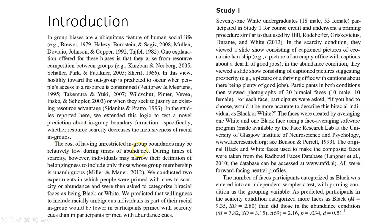'The cost of having unrestricted in-group boundaries may be relatively low during times of abundance' — meaning it might not matter that much if we include people who aren't quite like us. 'During times of scarcity, however, individuals may narrow their definition of belongingness to include only those whose group membership is unambiguous.' So during scarcity, we might say: if you're even a little bit not like me, then you are not in my group.